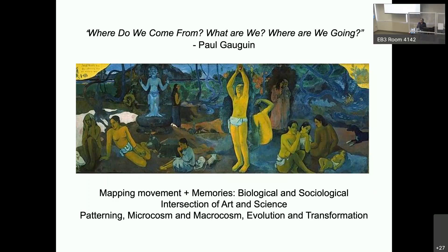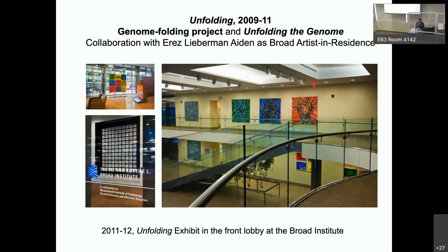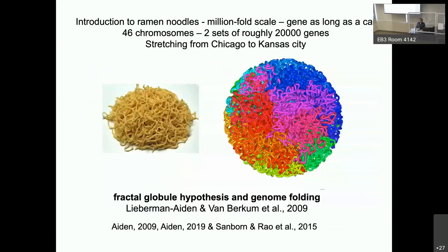Where do we come from? What choices do we make to understand and determine them? My first project is a collaboration with Erez Lieberman-Aiden from 2009 to 2011. As artist in residence at the Broad Institute of MIT and Harvard, I worked intensively with him on a project related to genome folding and 3D genome architecture. Erez had just successfully published a paper with Van Berkham in 2009, in which they had deciphered a way for determining the 3D genome architecture. He explained to me his hypothesis of the fractal globule model for the 3D genome structure.